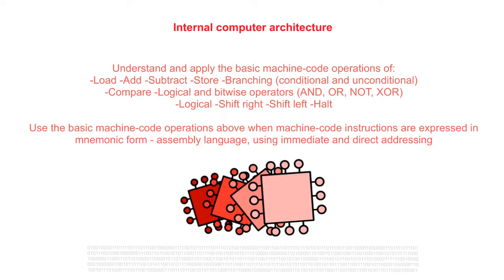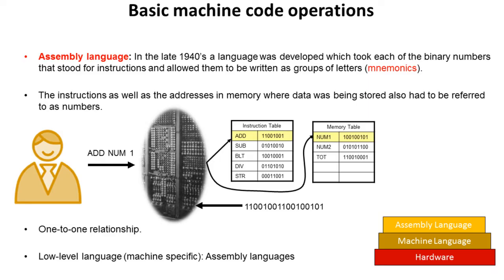In this video we're going to look at how you understand and apply basic machine code operations. Back in the late 1940s a language was developed which took binary machine specific code and allowed us to write groups of letters called mnemonics so that programming became easier and more accessible.